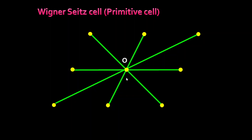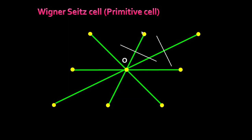I have drawn eight connecting lines from the lattice point at the origin. Now I will draw perpendicular bisectors to those eight lines. A perpendicular bisector bisects the line into equal parts and is inclined at 90 degrees to it. So it bisects the connecting line into equal parts and is perpendicular to it — this is the perpendicular bisector to this line.